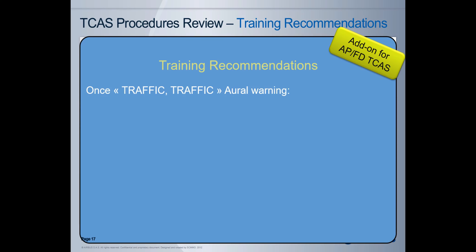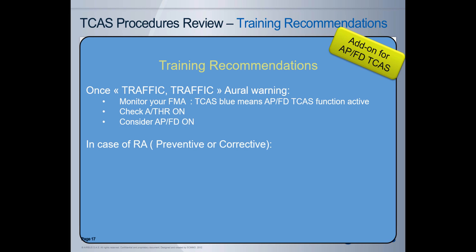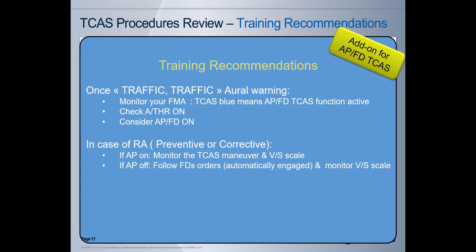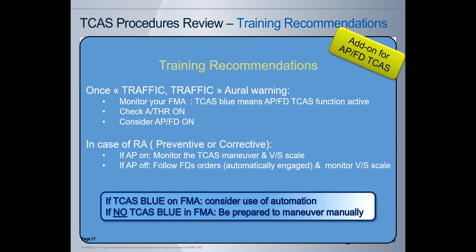For aircraft equipped with the APFD-TICAS function, our training recommendations are as follows. If TICAS blue appears on the FMA, this means your aircraft is equipped with the APFD-TICAS function. In that case, check that the autothrust is on and consider the use of the autopilot and FD bars. In case of RA — preventive or corrective — if the autopilot is on, the PF monitors the maneuver. If the autopilot was disconnected, the PF follows the FD bars and monitors the vertical speed to fly within the green zone of the vertical speed scale. The main message is: if TICAS blue appears on the FMA, consider the use of the automation; if not, be prepared to fly the TICAS maneuver manually.